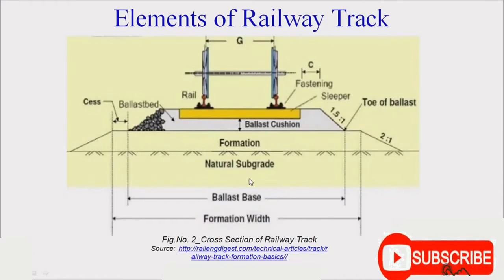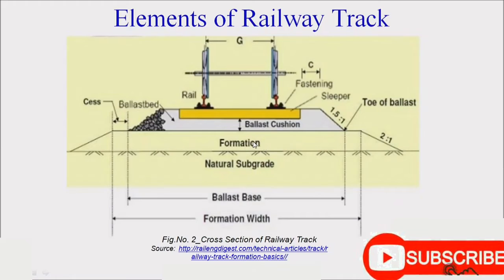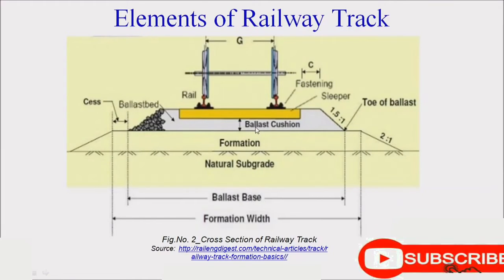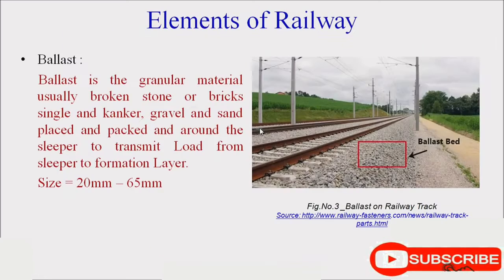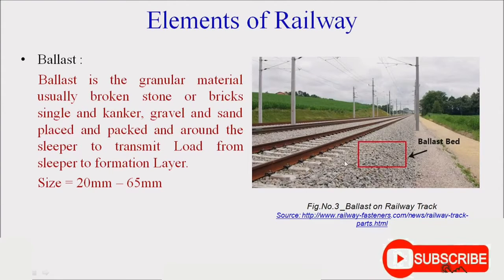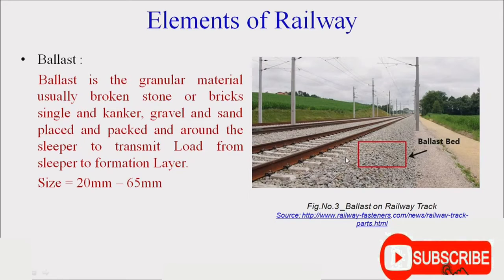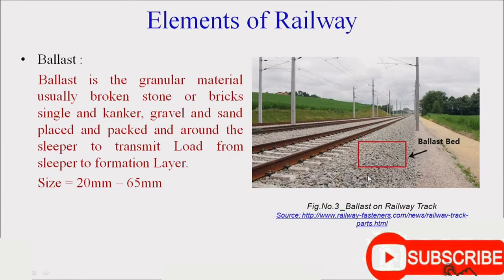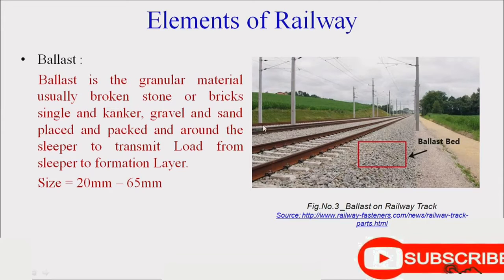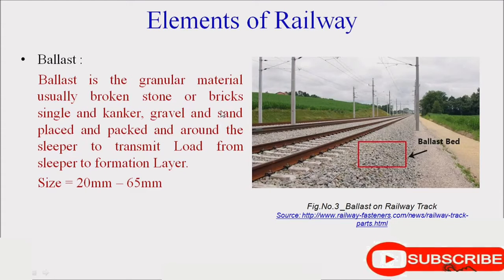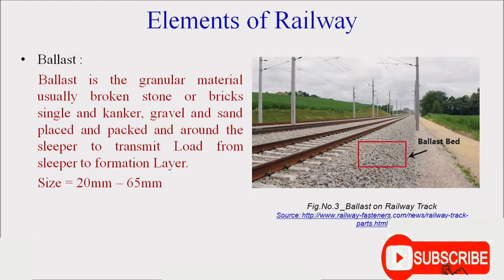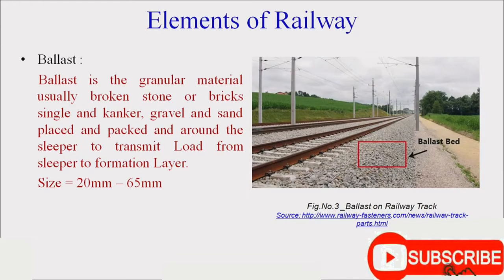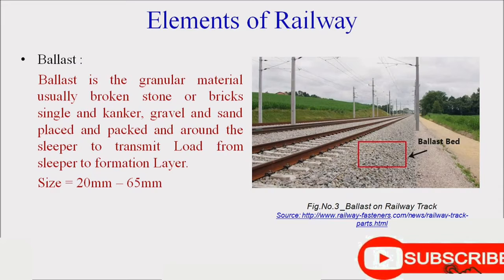After the natural subgrade comes the formation level, and then the first element of the railway track is ballast. The lowermost part of the railway track consists of aggregates of size 20 mm to 65 mm, called the ballast bed. Ballast is granular material — usually broken stones, bricks, gravel, or sand — placed and packed around the sleepers to transmit the load from the sleepers to the formation level.